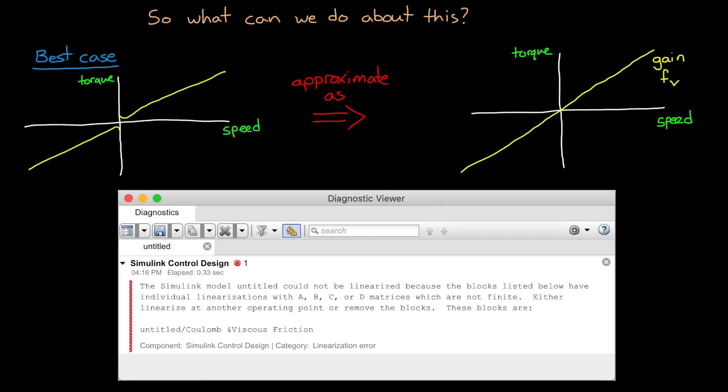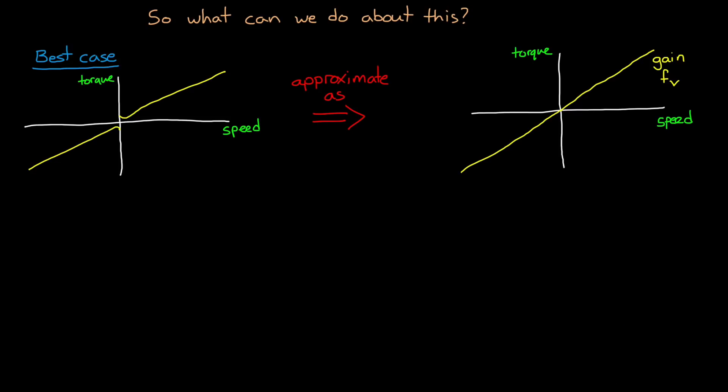If we tried to linearize this block around zero RPM in Simulink, it would throw an error stating that this block produces non-finite state-space matrices. And to get around that, we could use our knowledge that the discontinuity at the operating point is insignificant compared to the overall dynamics, and just assign this block a specified linearization.